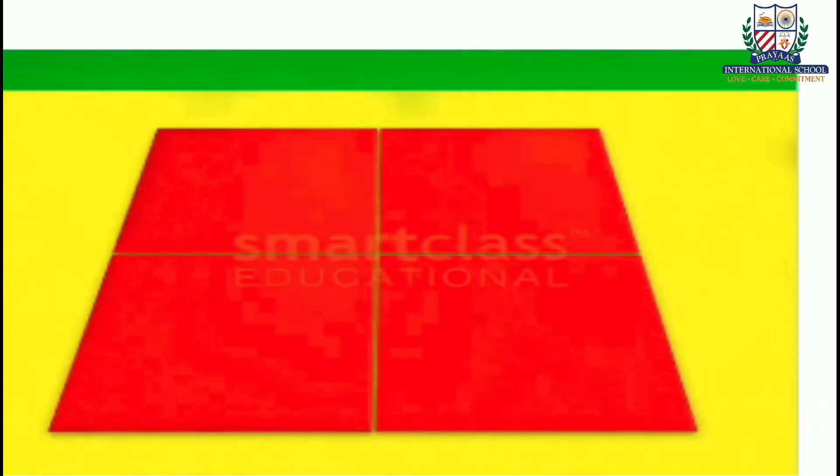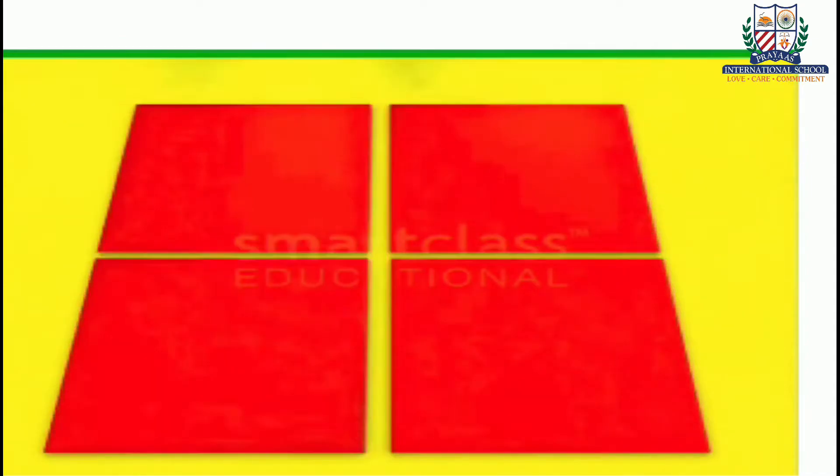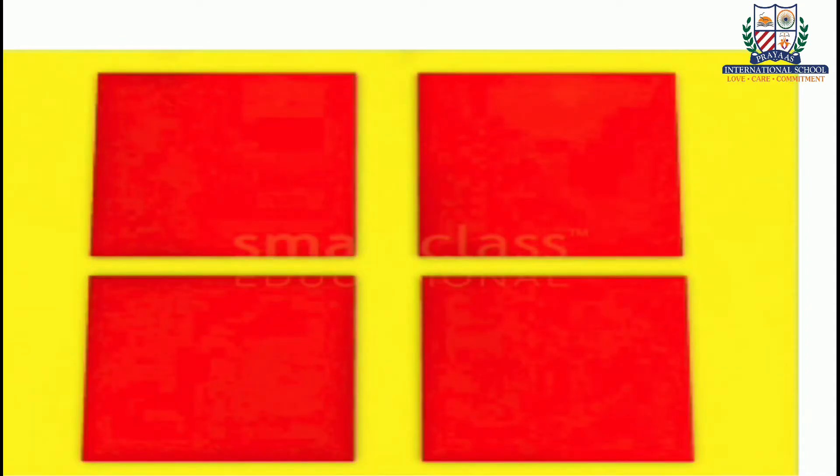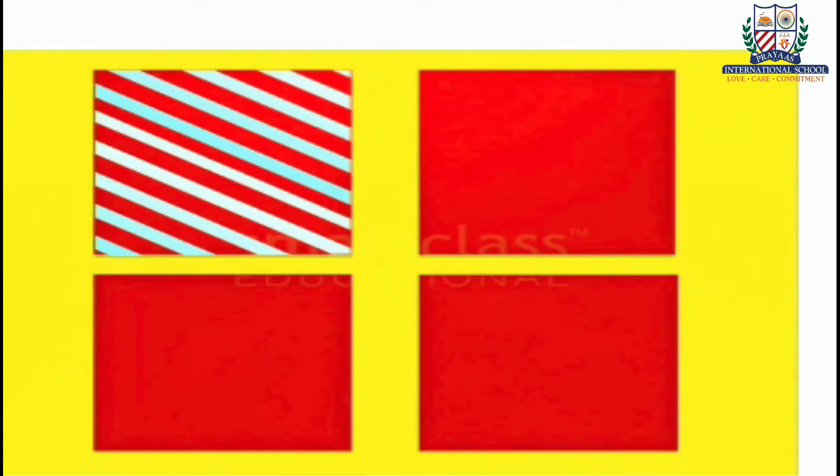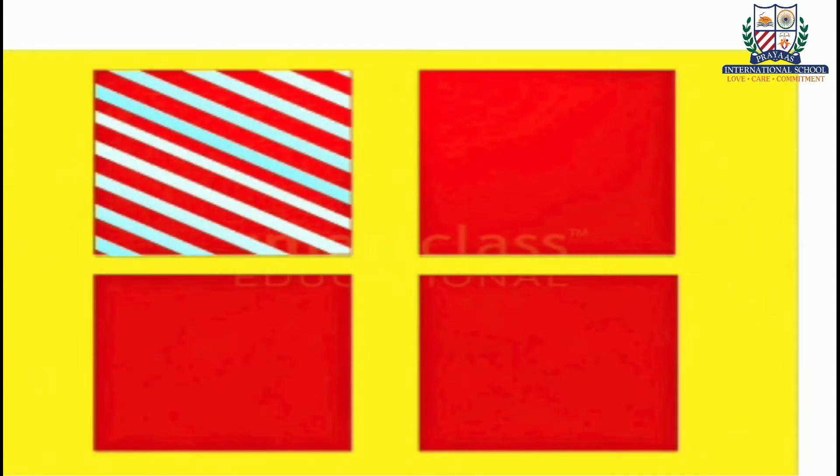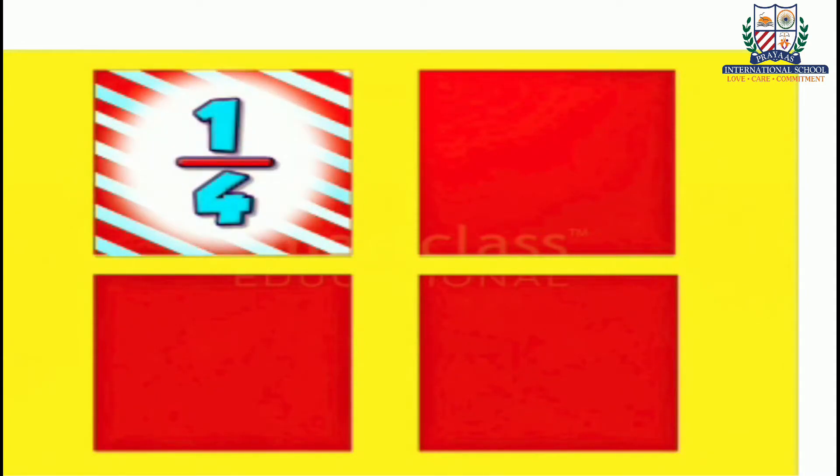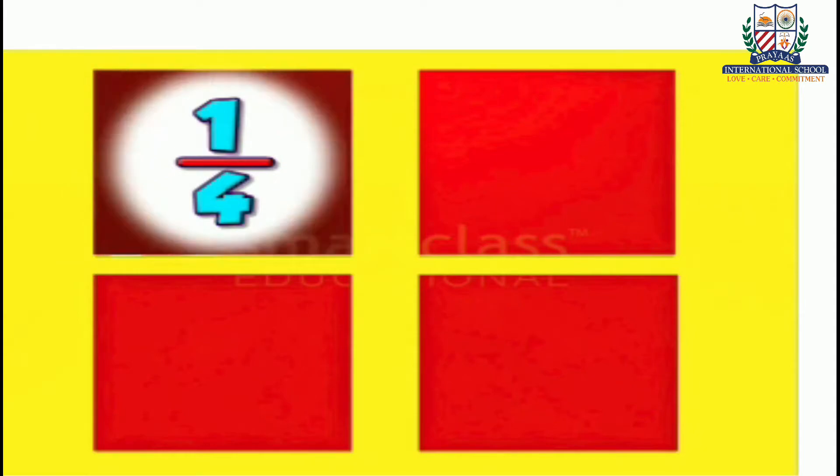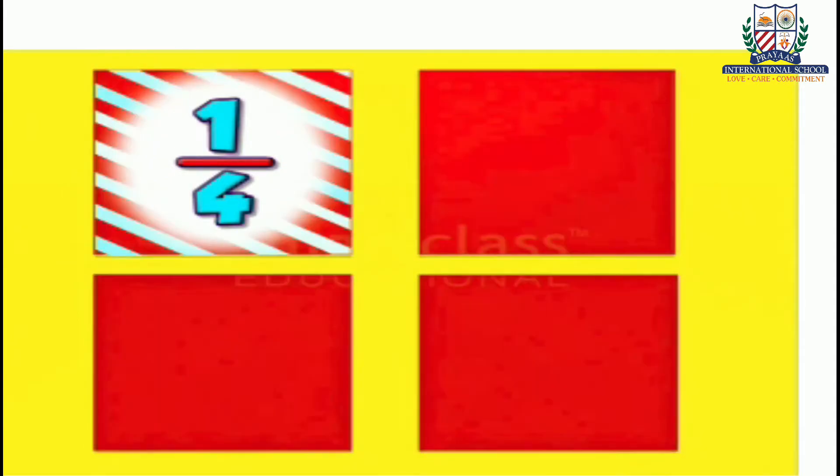Consider a whole which is divided into four equal parts. One part of these four equal parts is called one fourth of the whole. We write it as one by four. This means one part out of four parts.